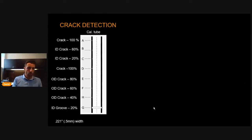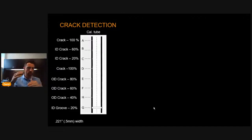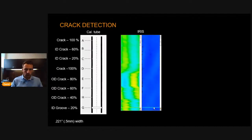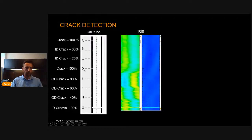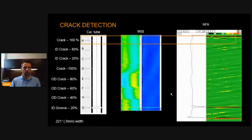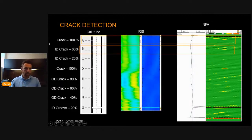On crack detection — this is a tube we scanned in our lab, a calibration tube. We have a few cracks: the first three at the top are ID cracks — one is through-wall at 100%. We first scanned this tube with IRIS, but IRIS is limited in detection capabilities for cracks — we were not able to pick up any of the defects, only the ID groove at the bottom. With NFA, we were able to see the first crack at 100%, and the second one at 60% ID — still a pretty deep defect.